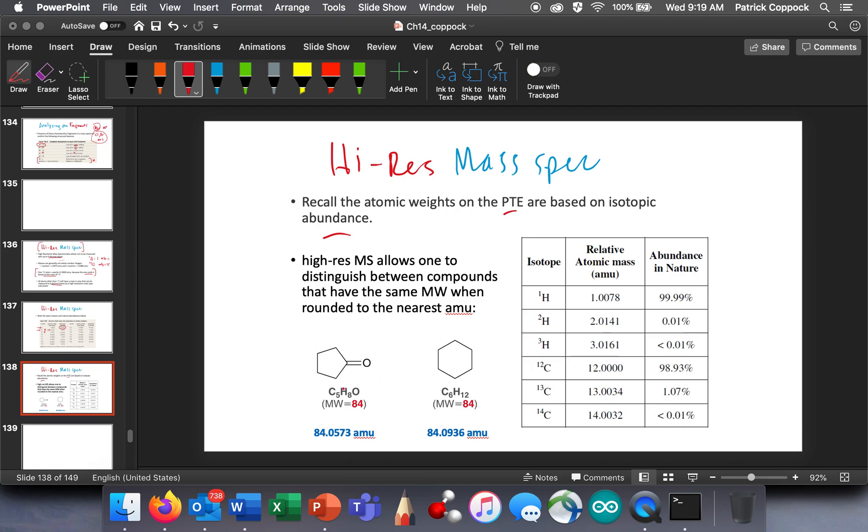So the way you've been seeing me calculate molecular weights, I would do something, look at this, C5H8O, I would do this. I would say 5 times 12 plus 8 times 1 plus 1 times 16. Because I'm rounding stuff. So this goes to 60 plus 8 plus 16, which is equal to 60 plus 24, which is equal to 84. And this is 6 times 12 plus 12 times 1, which is equal to 72 plus 12, which is also equal to 84.